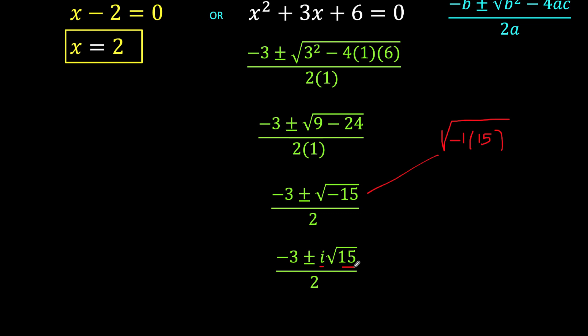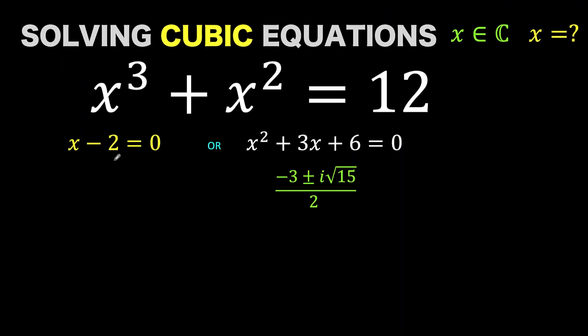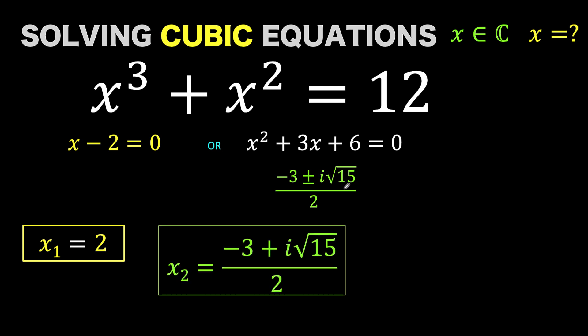So putting all together the roots that we found, we now have, for the first part, we already know previously that x is equal to 2. And from this latest result, this can be split into two roots. One is (-3 + i√15)/2, and the other one is (-3 - i√15)/2. This gives us the three roots of this cubic equation, which is consistent with the fundamental theorem of algebra.